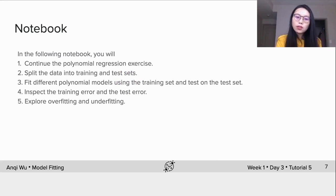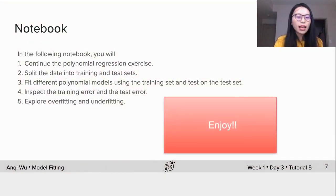In the following notebook, you will continue the polynomial regression exercise. You will split the data into training and test sets, you will fit different polynomial order models using the training set and test on the test set, inspect the training error and test error, and explore overfitting and underfitting. Again, hope you all enjoy!